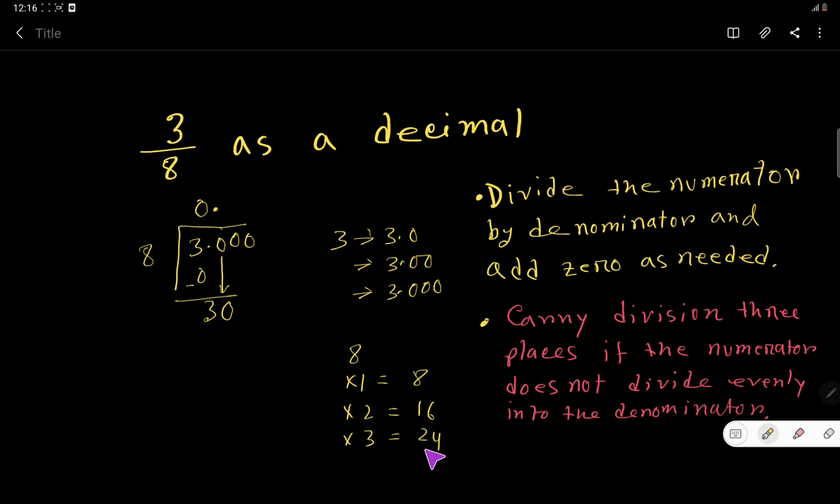24 is less than 30. Let's try 4: 8 times 4 is 32, which is greater than 30, so we take 3. 3 times 8 is 24. Subtract to get 6, then bring down the second 0.